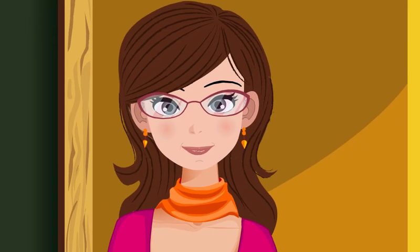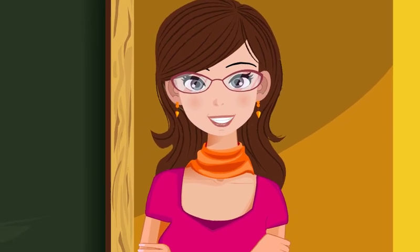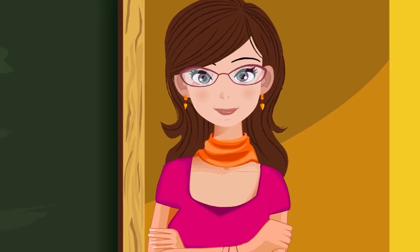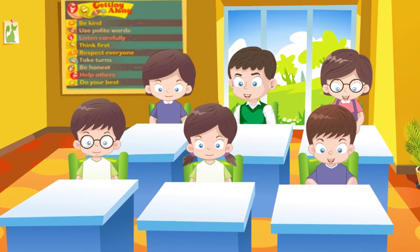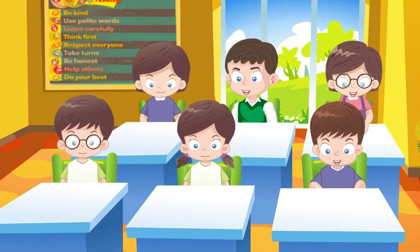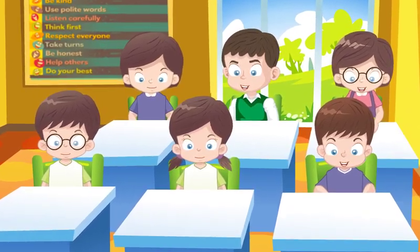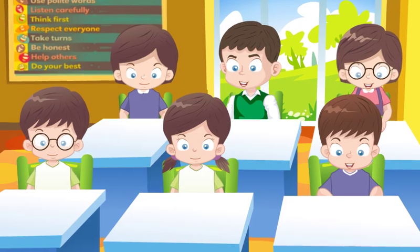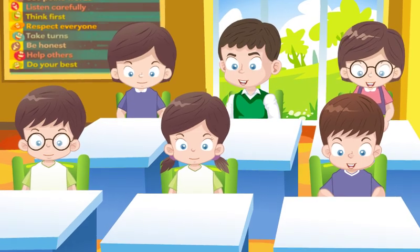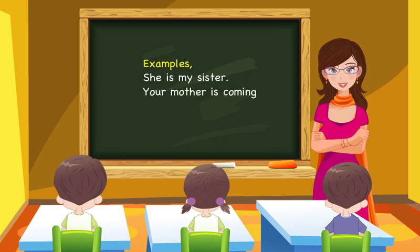Possessives: my, our, your, his, her, its, and their are called possessives. These are used to indicate the relation of things or actions with other things or nouns. Examples: 'She is my sister.' 'Your mother is coming.'